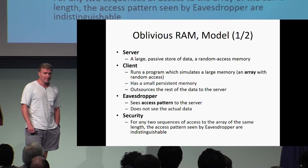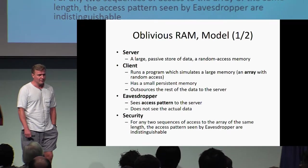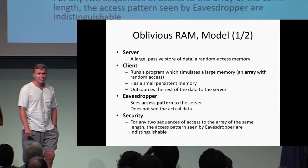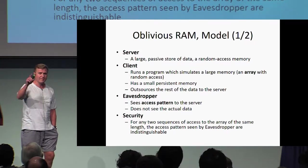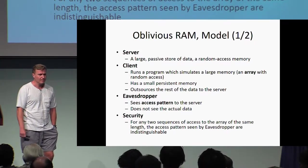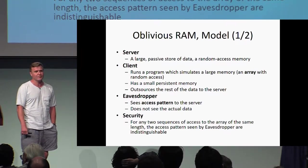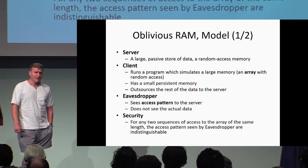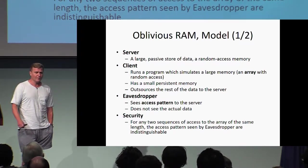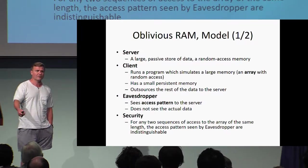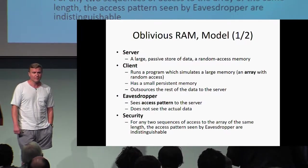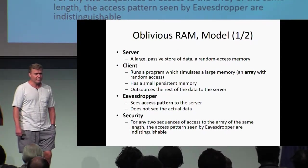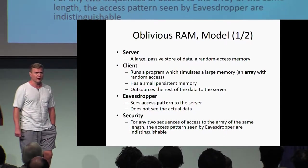In a little bit more detail, we can imagine a setting with a server and a client. The server will act basically as a large passive store of data, and the client will have random access to the memory on the server. The client itself will run a program which is simulating an array, which is also a random access data structure. The client has some small persistent memory itself, but it's outsourcing most of the storage onto the server. In between the server and the client, there will be an eavesdropper which can see the access pattern made onto the memory of the server.